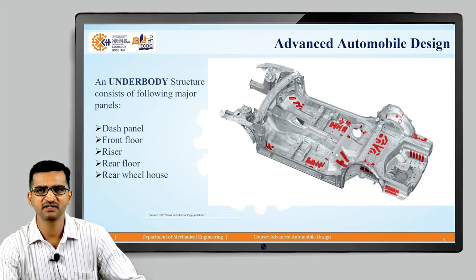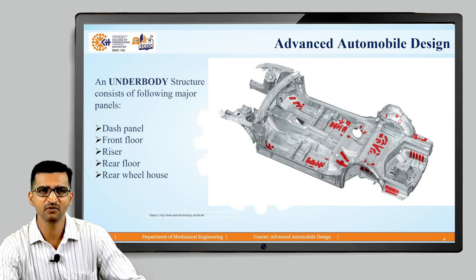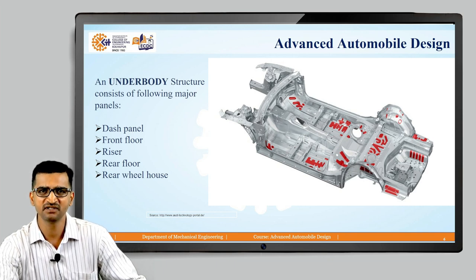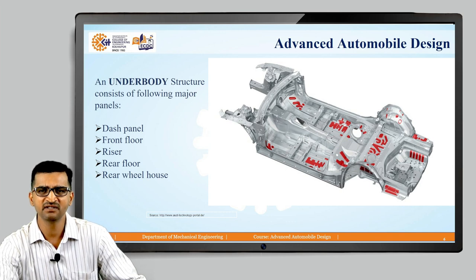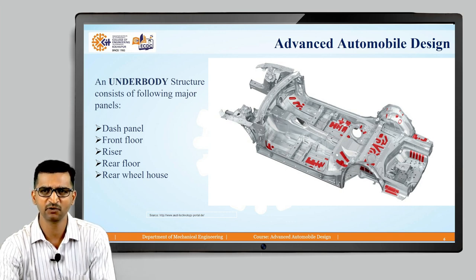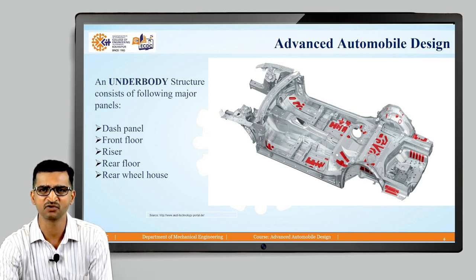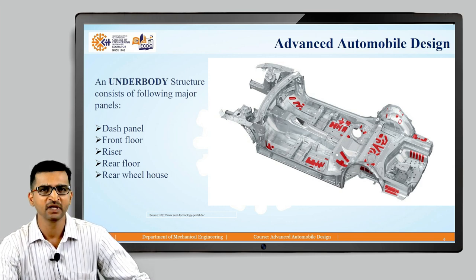This is the underbody structure — you can see the lower part of BIW of any car. Whenever I say BIW, we are specifically referring to the passenger car, not trucks and heavy vehicles. In the underbody structure, there are components like the dash panel, front floor, riser, rear floor, and rear wheelhouse. At the middle section, you can see one projection — the floor is not flat, and the specific reason is to improve bending moment resistance, thereby increasing the stiffness of the car under bending.